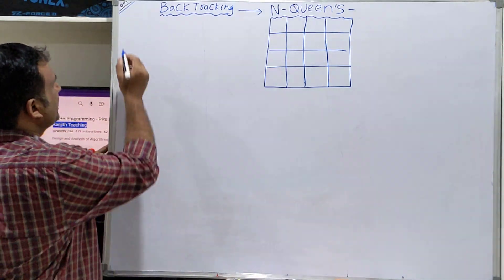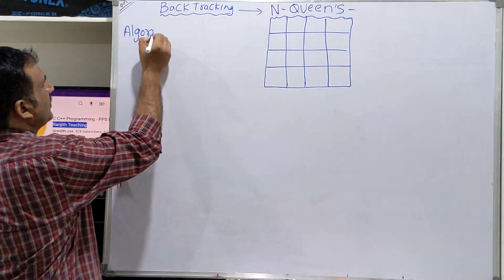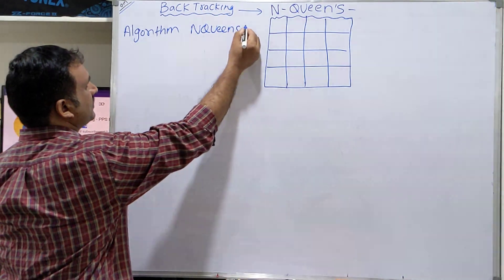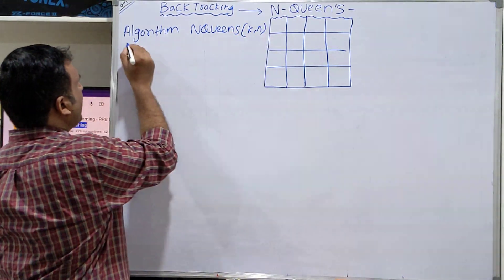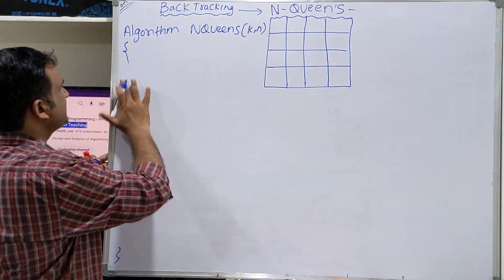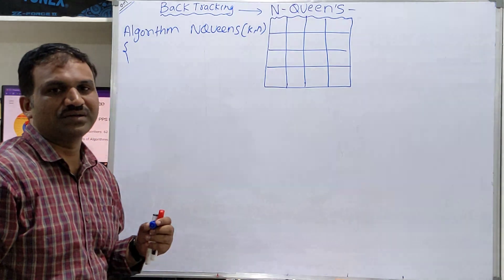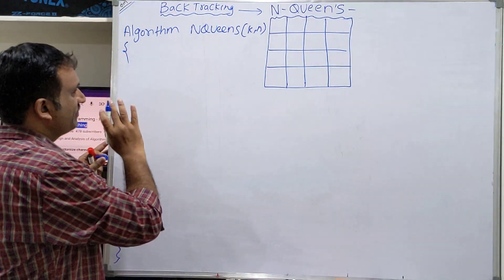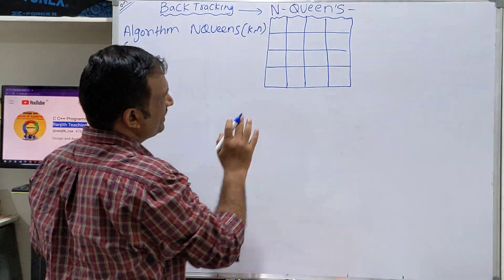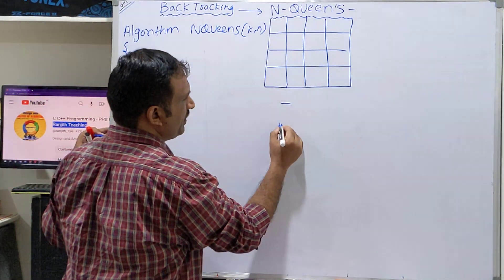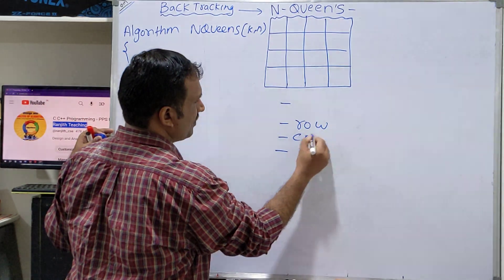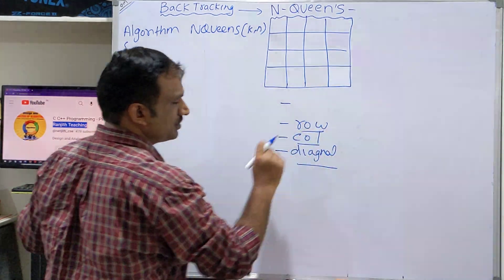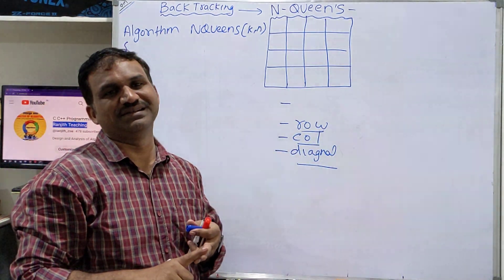Let us start writing the algorithm. The algorithm is called N-Queens with parameters k and n. We want to place the kth queen out of n. We need to place a queen such that no queen is in the same row, same column, or same diagonal — three things to consider.